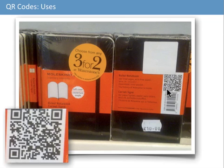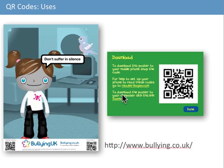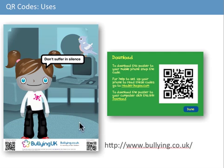In Waterstones, Moleskine notebooks had QR codes on the back — scanning takes you to the product specification for that notebook. At the National Galleries of Scotland in Edinburgh, a QR code on the reverse of an exhibition ticket links to a website with more information. An anti-bullying site, bullying.co.uk, invites young users to create posters automatically appended with a QR code, which they can share with friends who can scan them with their phones.